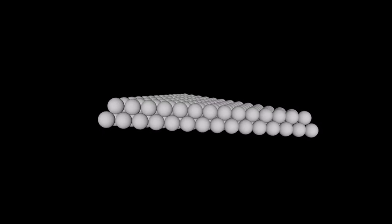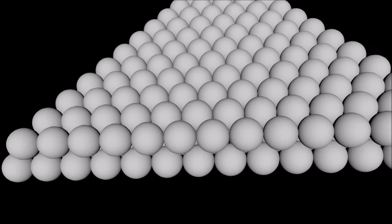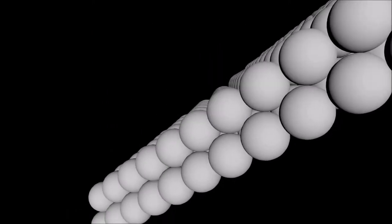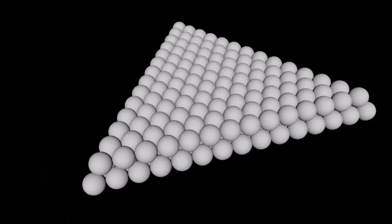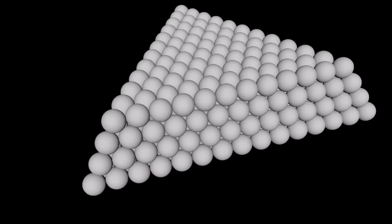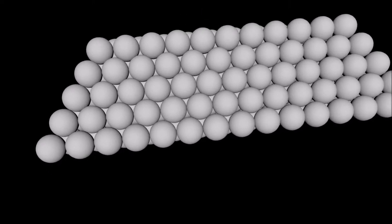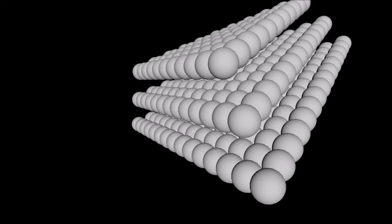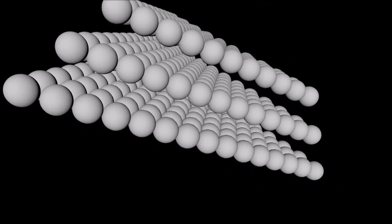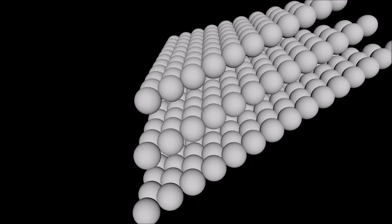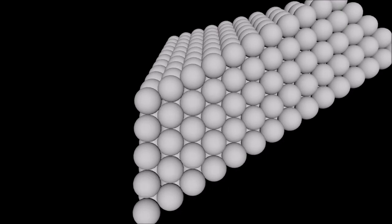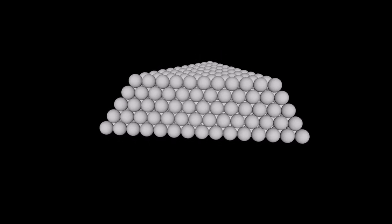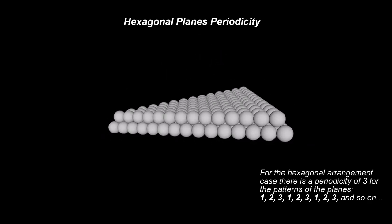Starting from a plane with a hexagonal lattice pattern, one can stack a second plane with a hexagonal lattice pattern on top of the first. To obtain the best arrangement possible, one has to translate the second plane along a direction that forms a 60-degree clockwise angle with the directions of the first plane. Once this is done, each sphere of the second plane is in contact with exactly three spheres from the first plane. One can then stack a third plane on top of the second, translating it along a direction that forms a 60-degree counterclockwise angle with the directions of the first plane, so that any sphere from the third plane touches exactly three spheres from the second plane.